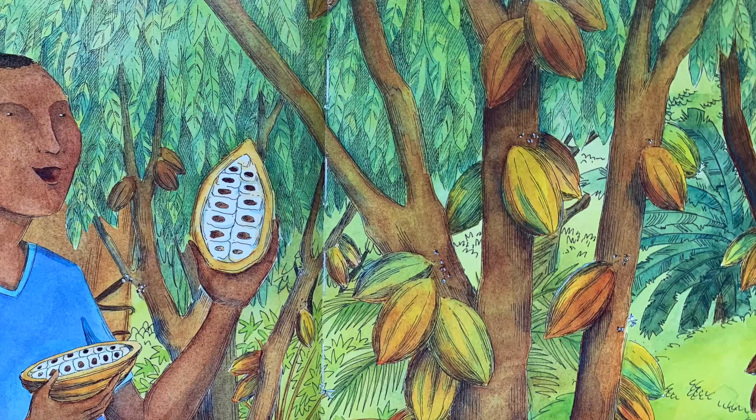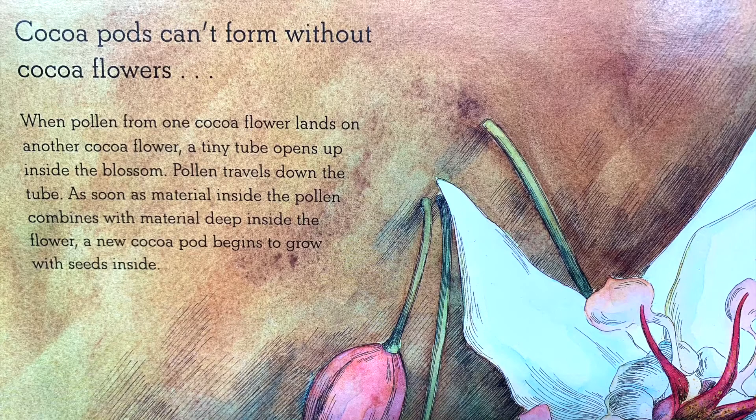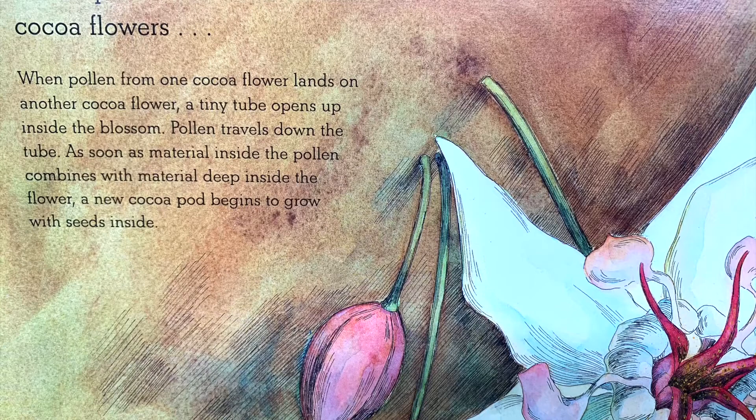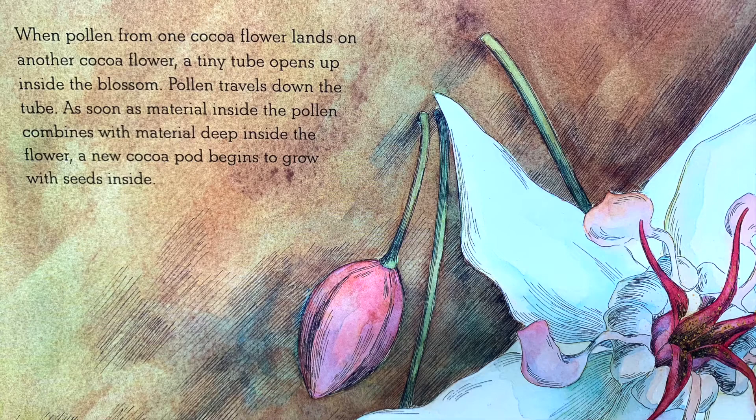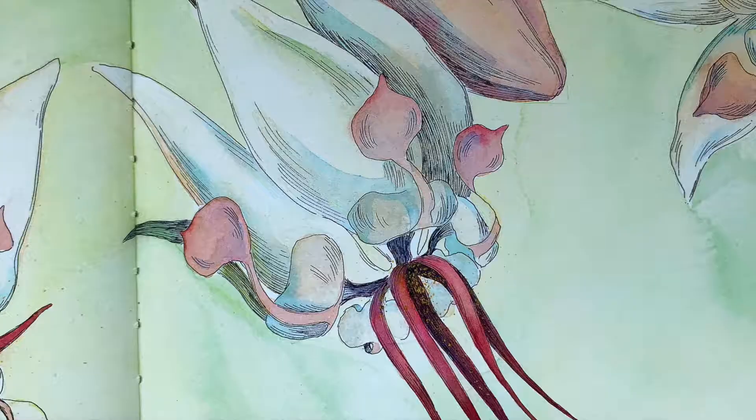Cocoa pods can't form without cocoa flowers. When pollen from one cocoa flower lands on another cocoa flower, a tiny tube opens up inside the blossom. Pollen travels down the tube. As soon as material inside the pollen combines with material deep inside the flower, a new cocoa pod begins to grow with seeds inside.